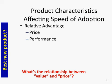As we can see at the bottom of the screen, what's the relationship between value and price? The performance has to be high if the price is high in order for us to think that we're getting a good value. If the price is low, we'll normally accept a little bit less performance and still consider it a good value. So relative advantage is one thing that affects the speed of adoption.